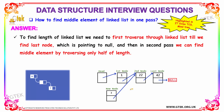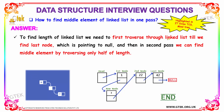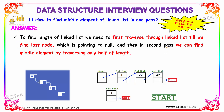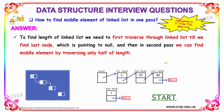Our next question is: how to find the middle element of a linked list in one pass? To find the length of the linked list, we first traverse through it until we find the last node, which points to NULL. Then in a second pass, we can find the middle element by traversing only half of the linked list.